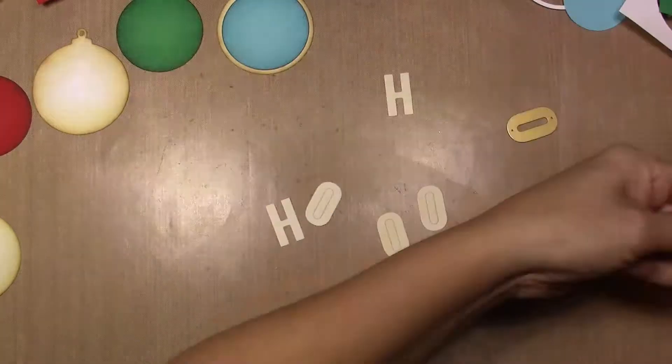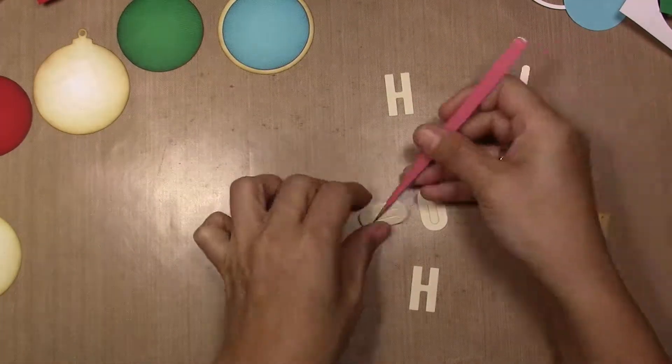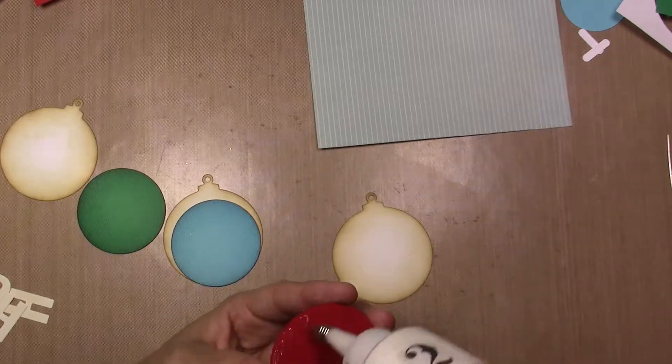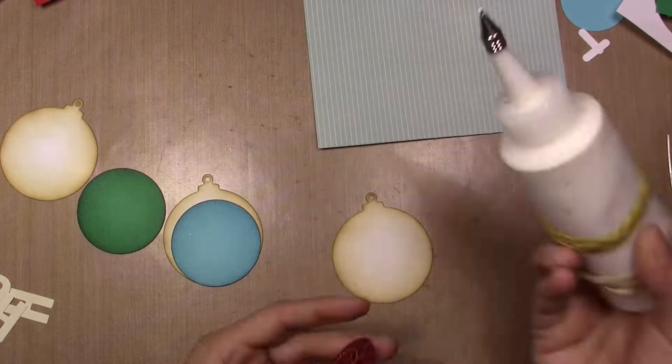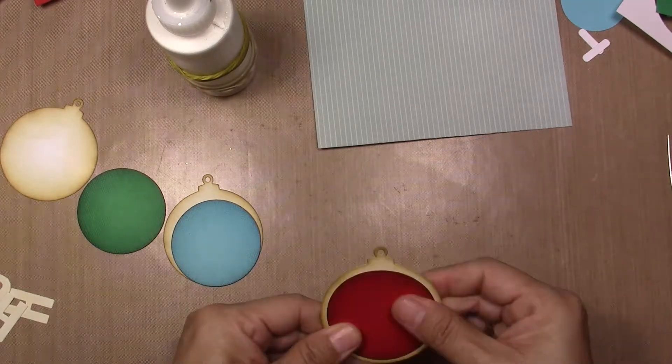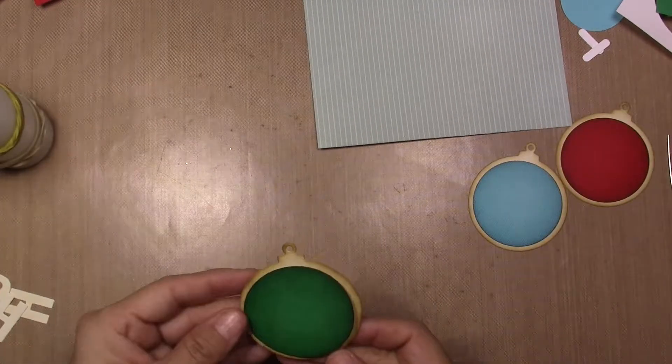I am distressing more paper to use to cut my letters. I cut three H's and three O's to make the word ho ho ho for each ornament. Now I'm gluing down my circles and then I'm going to glue down my letters.